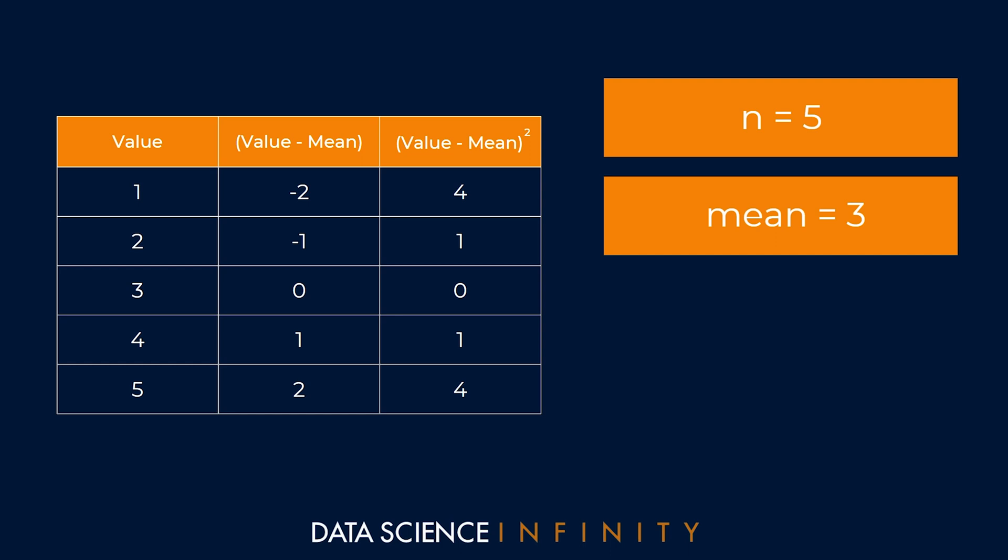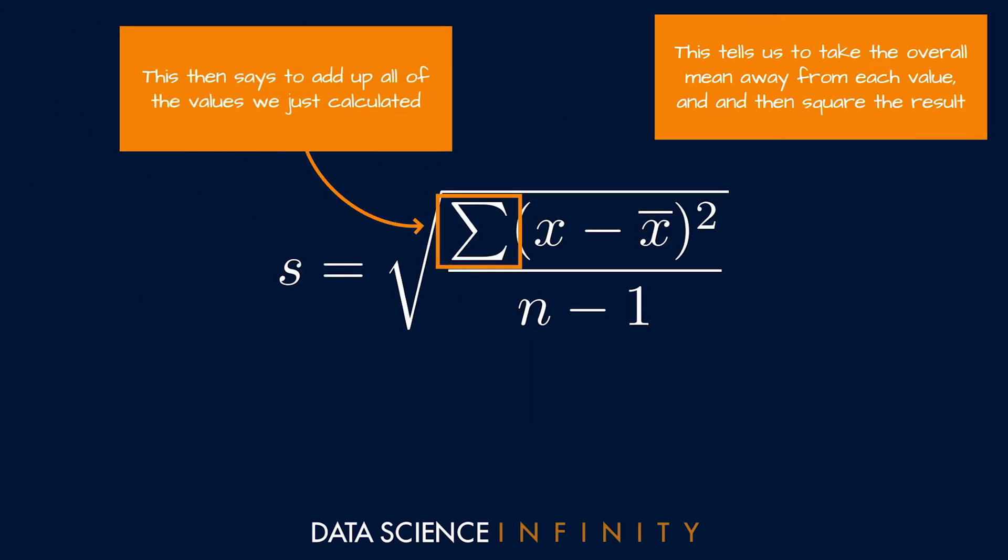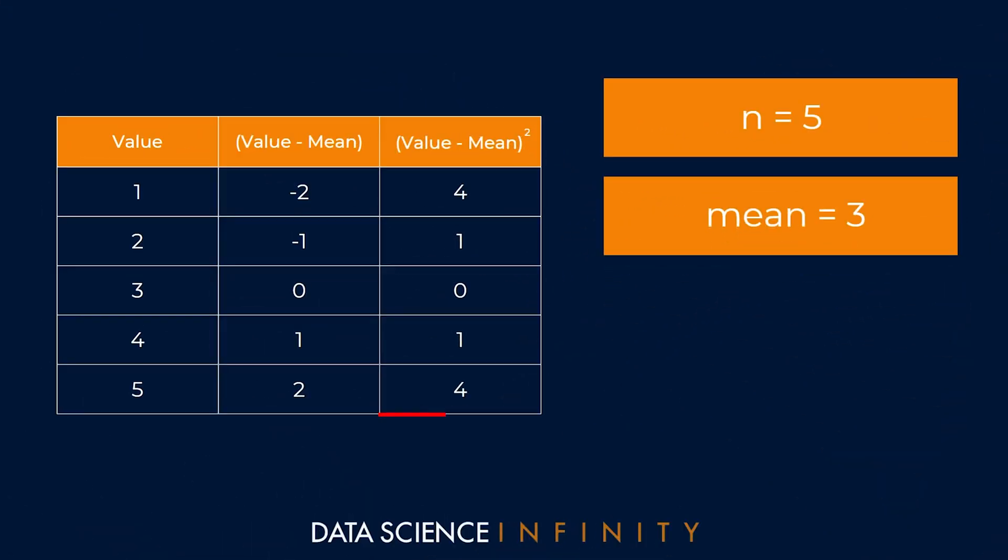Once we've done that, the next step in the formula was to sum those squared values up. So back to our table of data, that would be the sum of that third column. So four plus one plus zero plus one plus four, which equals 10. And this represents the total squared deviation of our data.